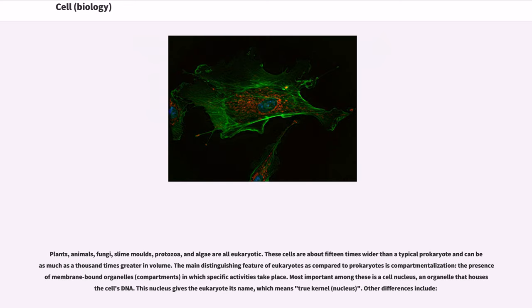Plants, animals, fungi, slime molds, protozoa, and algae are all eukaryotic. These cells are about 15 times wider than a typical prokaryote and can be as much as a thousand times greater in volume.